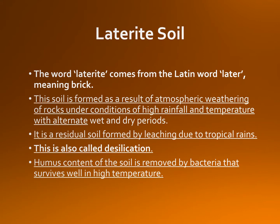This soil is formed as a result of atmospheric weathering of rocks under conditions of high temperature and rainfall with alternate wet and dry periods. It is a residual soil formed by leaching due to tropical rains. Leaching is a process in which the nutrients get percolated down below the soil due to heavy rainfall. Lime and silica are leached away and aluminum compounds are left behind. Humus content of the soil is removed by bacteria that survives well in high temperature.